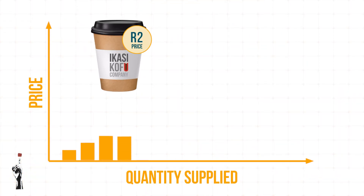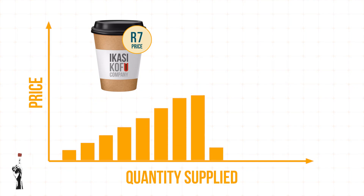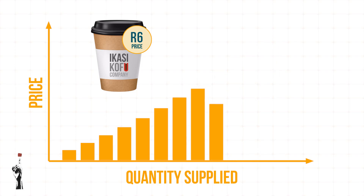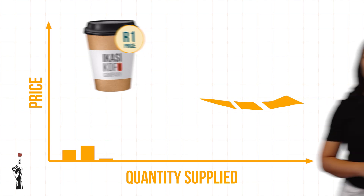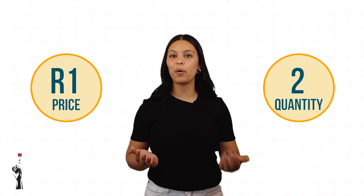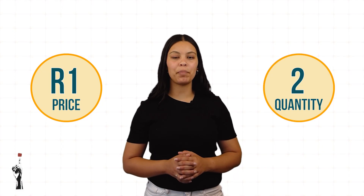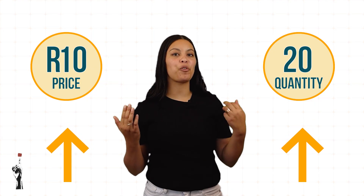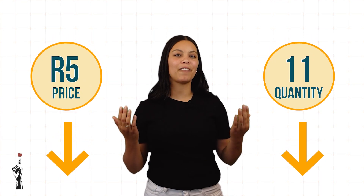An increase in the price of a good or a service results in an increase in quantity supplied, and a decrease in the price will also result in a decrease of quantity supplied. There is a direct relationship between price and quantity when we look at supply. When the one increases, the other one will too, and vice versa.